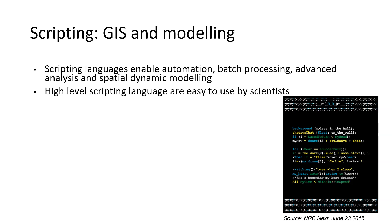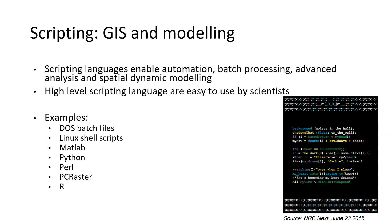Here are some examples of high-level scripting languages. We can use, for example, batch files in DOS or shell scripts in Linux to automate procedures. Many engineers learn how to use MATLAB or Python for their processes. Later in this course, you will learn Python, a programming language.